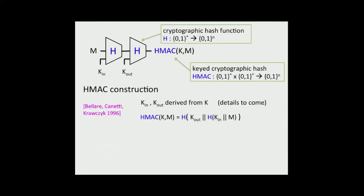HMAC is a hash function construction introduced in 1996 that specifies how to use a black box cryptographic hash function to build a keyed cryptographic hash function. That means an object that takes both a variable length key and a variable length message and maps it down to an n-bit digest. HMAC does this by deriving two subkeys, K-in and K-out, from the key K, and then hashing the message and the first subkey, and then hashing the result of that prefixed with the second subkey. We'll see some details about the way K-in and K-out are derived, which is very critical to our results.